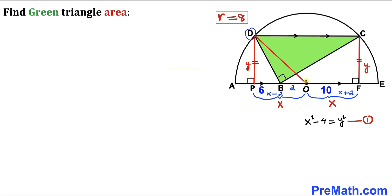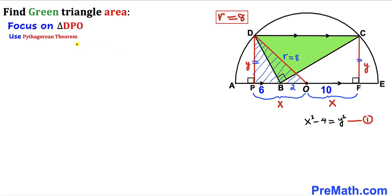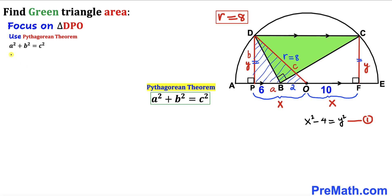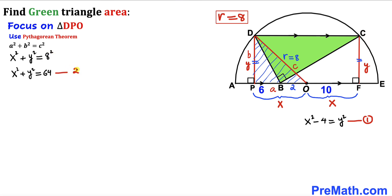In our next step, I have connected point D with center O. We can see that DO is the radius of this semicircle, so DO equals 8. Now let's focus on right triangle DPO and apply the Pythagorean theorem: a squared plus b squared equals c squared. Here a is x, b is y, and c is 8, so x squared plus y squared equals 64. Let me call this equation number 2.